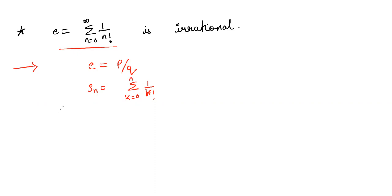Now note that E minus Sn is equal to 1 over n plus 1 factorial plus 1 over n plus 2 factorial plus dot dot.